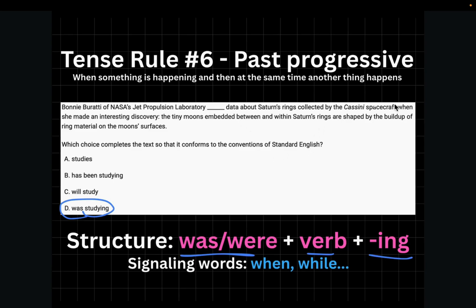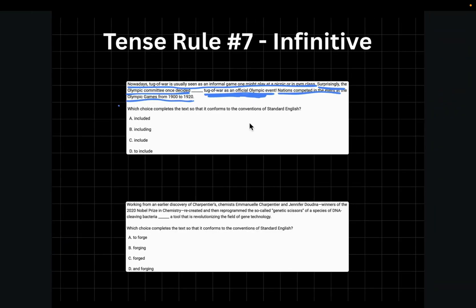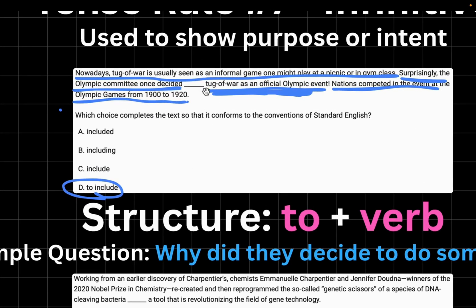Also, you'll sometimes see signaling words such as when or while show that you're supposed to use a past progressive verb. Nowadays, tug-of-war is usually seen as an informal game one might play at a picnic or in gym class. Surprisingly, the Olympic committee once decided blank tug-of-war as an official Olympic event. Nations competed in the event at the Olympic Games from 1900 to 1920. So in the line after the blank, it shows the purpose or intent behind what they wanted to do. Therefore, you can use an infinitive multiple choice, which is tense rule number seven. Infinitives are used to show purpose or intent, and their structure is basically to plus verb, which means that choice D in this case would be correct. A simple trick I use to know if I should use an infinitive or not is I ask myself, why did they decide to do something? In this case, to include tug-of-war as an official Olympic event. Whenever you can answer this question, that means you can select the infinitive multiple choice.